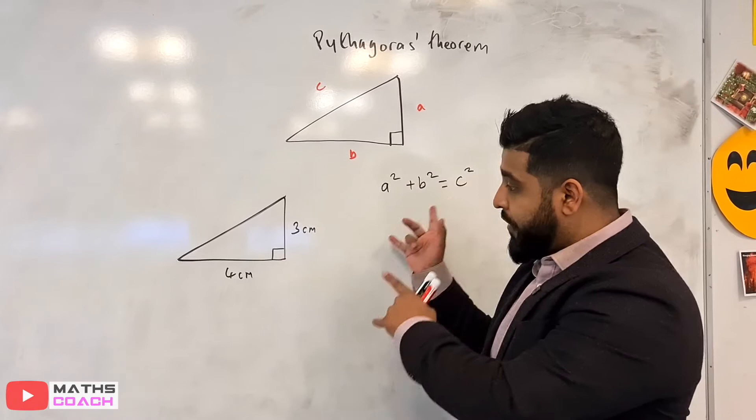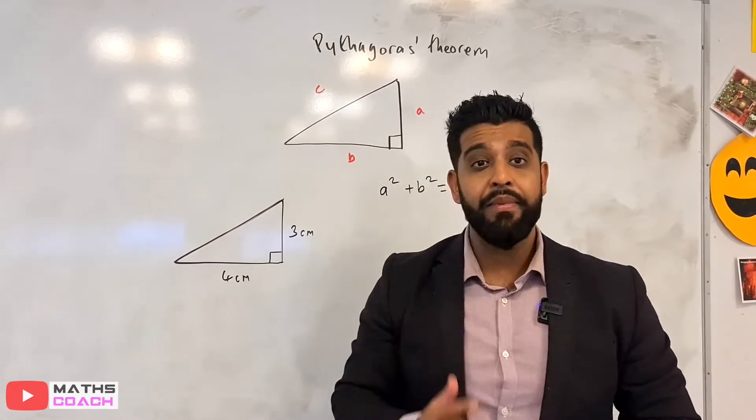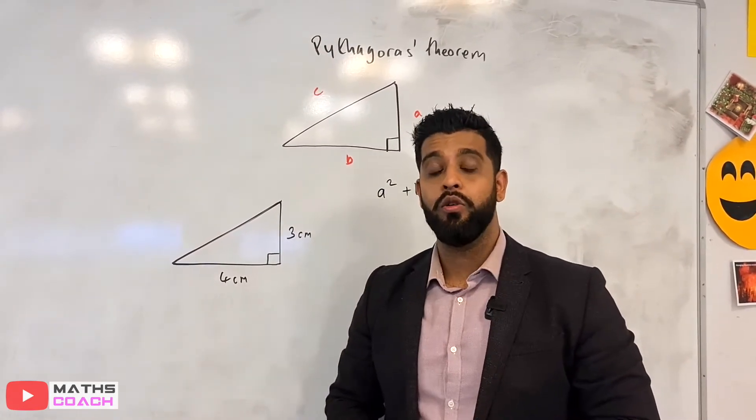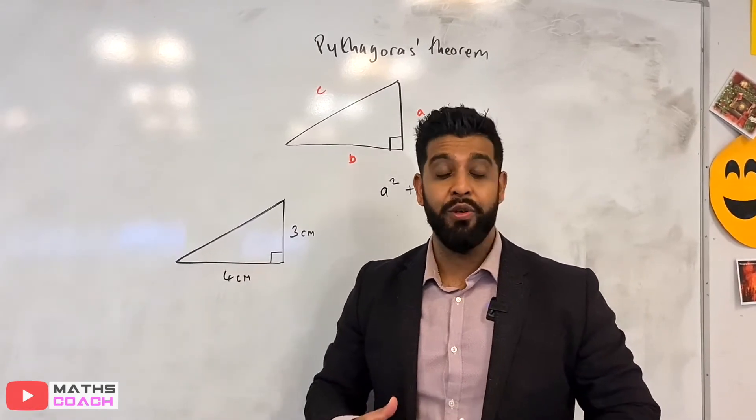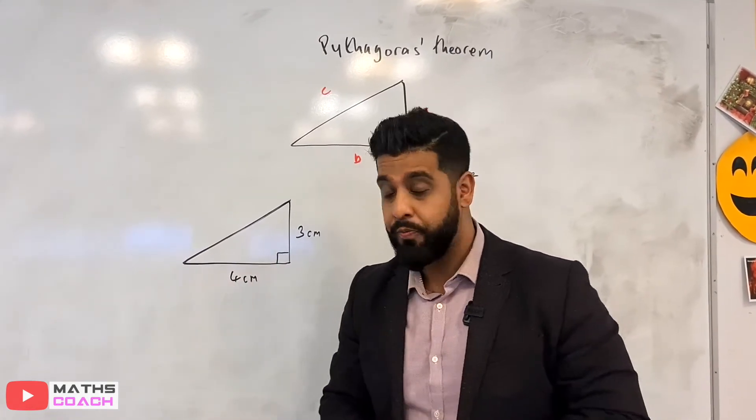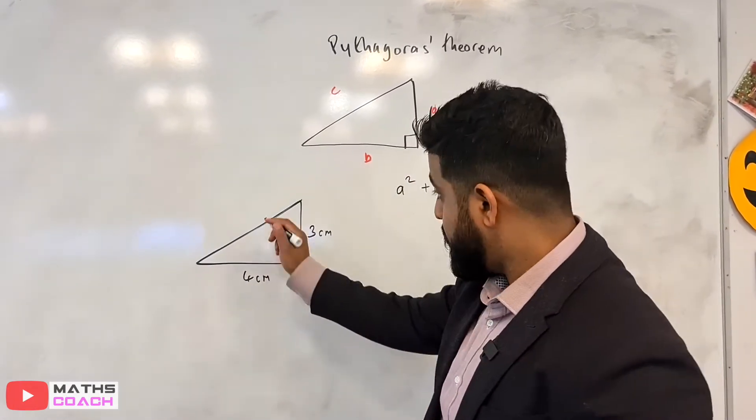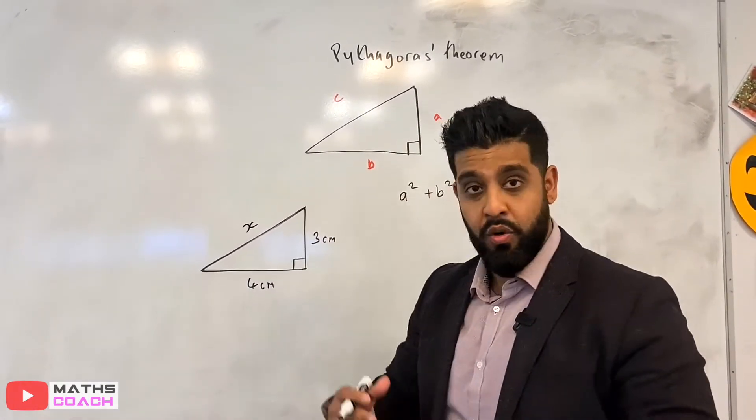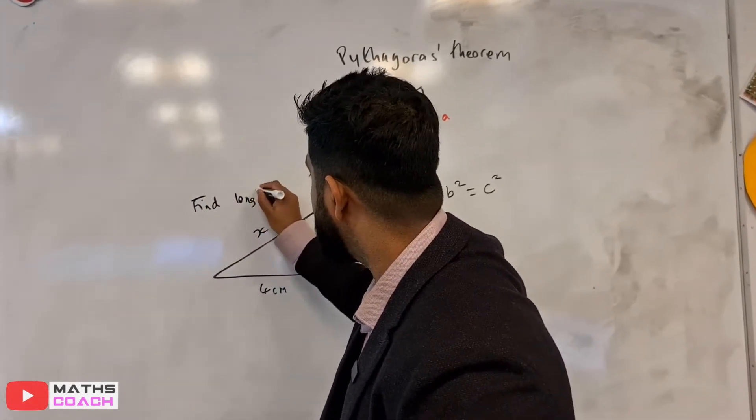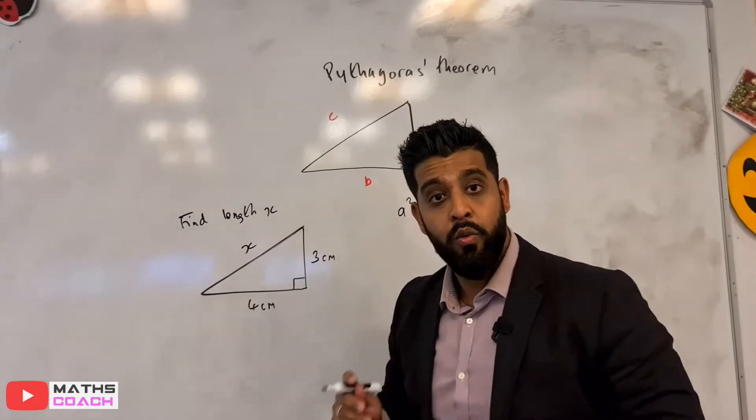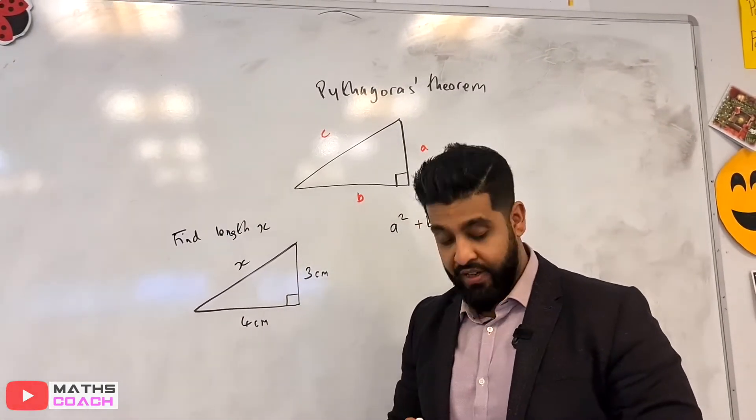We're going to apply our theorem on this triangle. Now step number one, and you're probably not going to be told to do this, so that's something that you need to do, you need to get into the habit of doing, which is labeling your triangle. So this might be as X, or it might be as another letter, and your question will say to you, find length X.